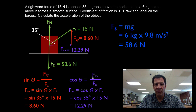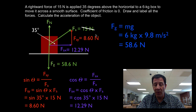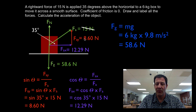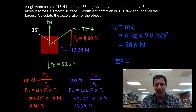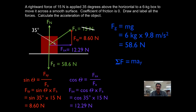I'm going to cross off the 15 Newtons — not because the applied force goes to zero, but because we're now going to use the components instead of the whole applied force. We'll use the x component and the y component to solve the rest of the problem. The next thing is to find the normal force using the sum of forces in the y direction.